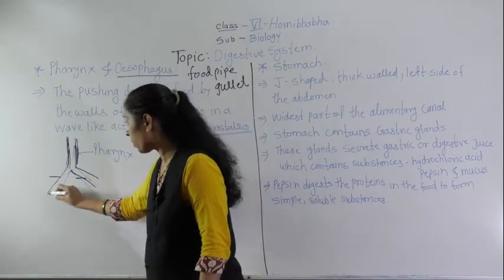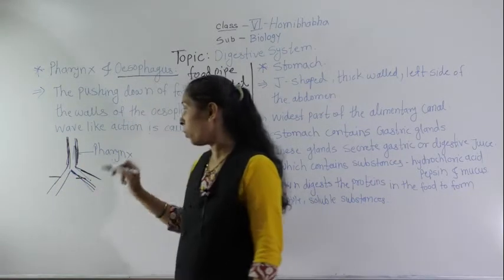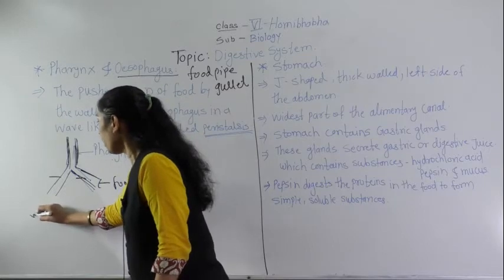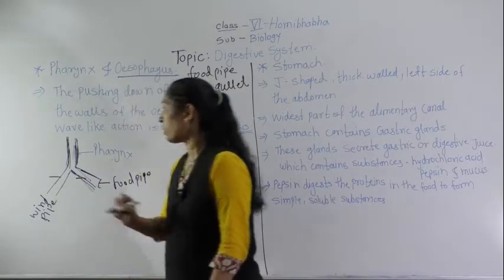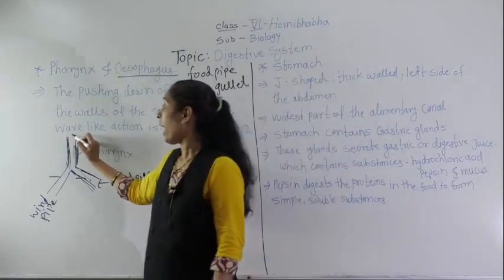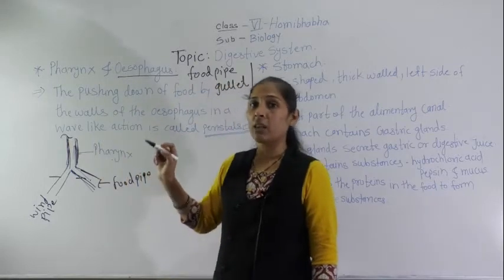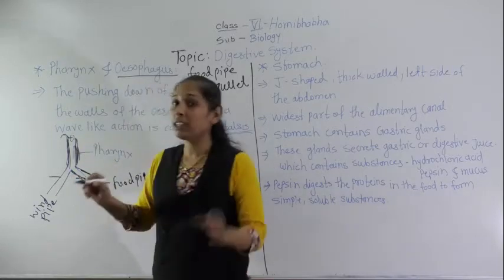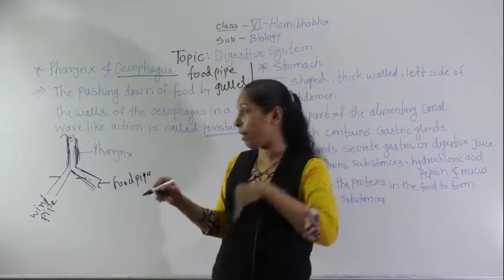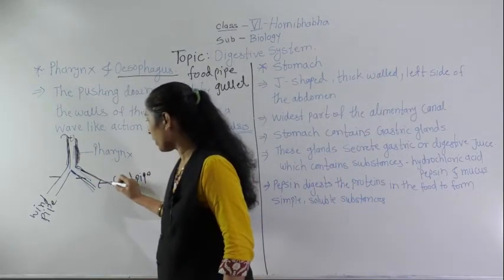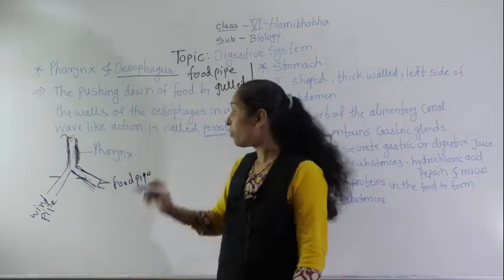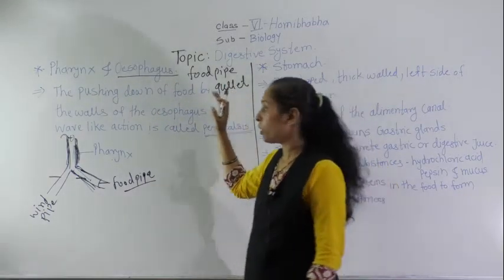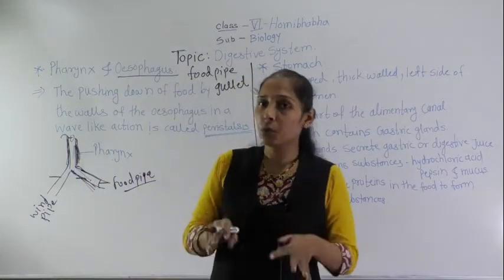At its end, the pharynx gets divided into two parts: the food pipe and the wind pipe. As food gets softened in the mouth, it gets pushed or swallowed into the pharynx, and after the pharynx it comes into the food pipe, which is called the esophagus or gullet. So the pharynx is the muscular organ which pushes food into the food pipe.